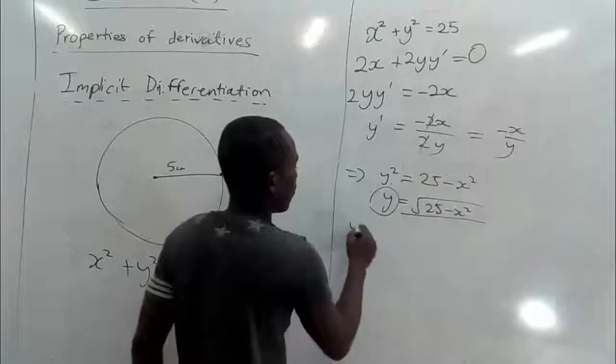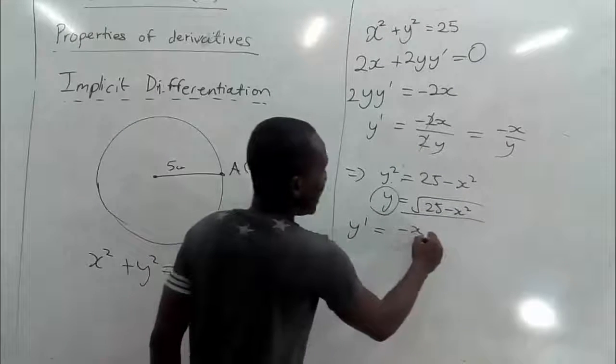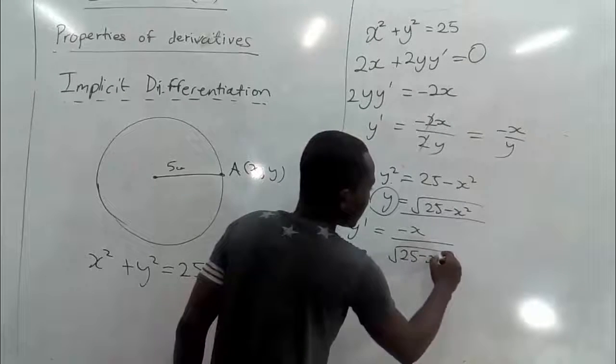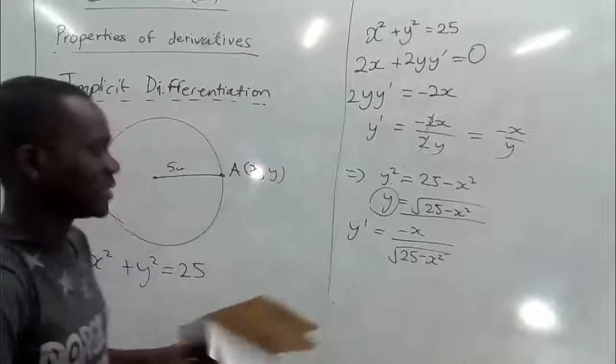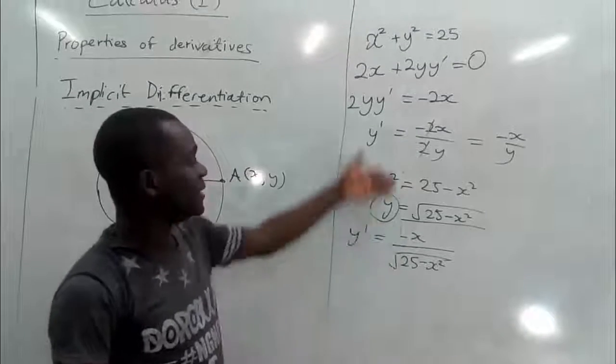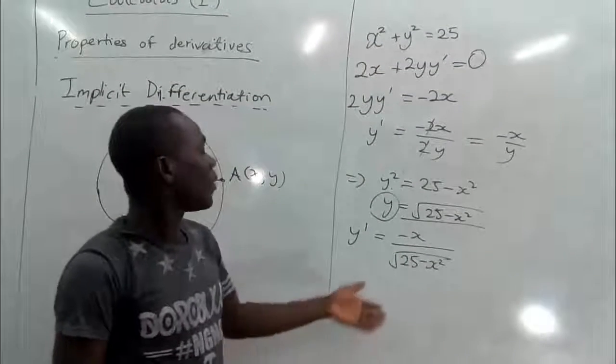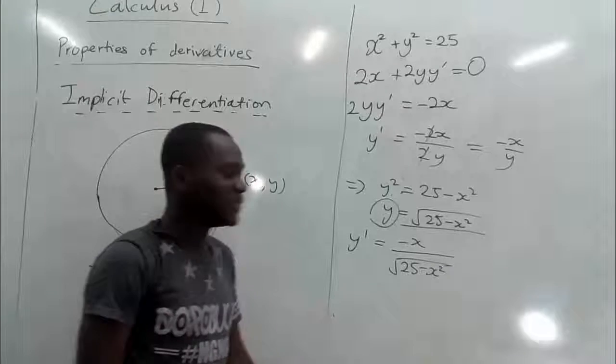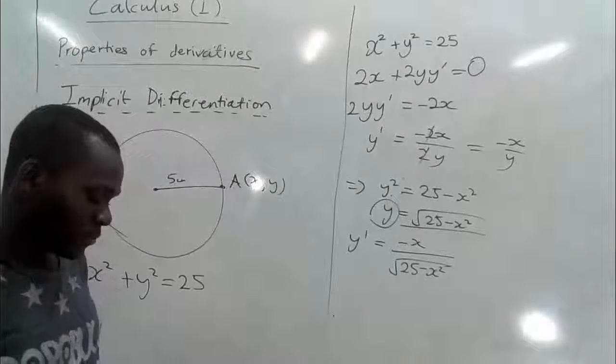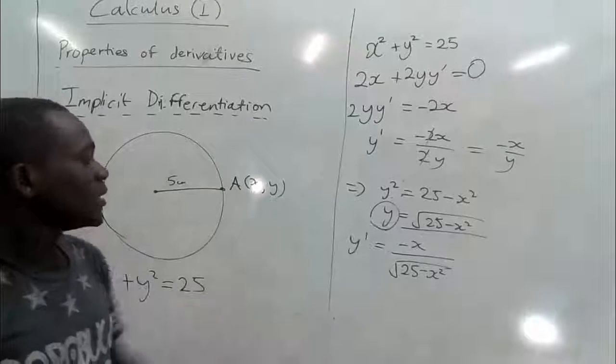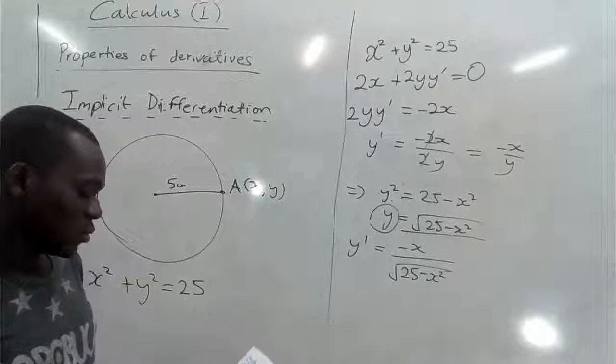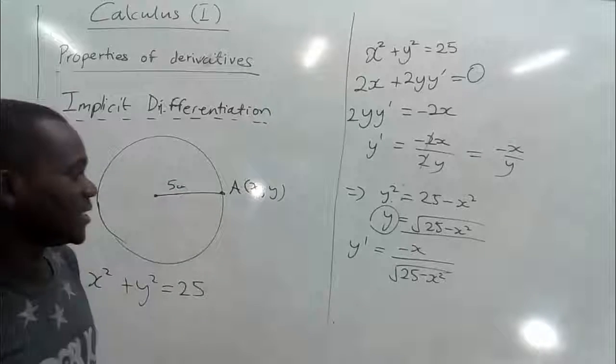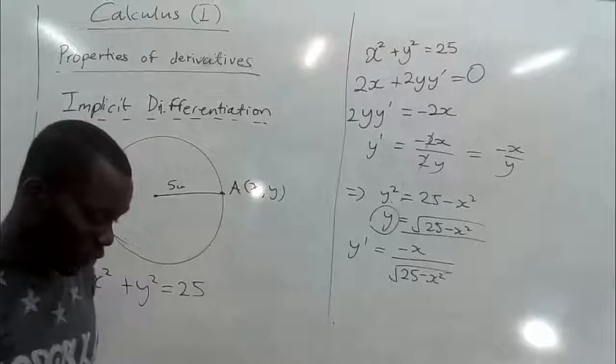So coming back to the y prime we are having negative x all over square root of 25 minus x squared as a derivative. So if you want to find a gradient of this equation all that you need is to take the negative value of x all divided by square root of 25 minus x squared. So that is the final derivative we want to find. So that is what happens for derivative when we are talking about implicit differentiation. This is just an easy aspect of it.